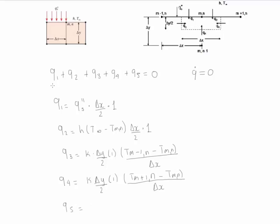And the last one that we have is Q5. We got K delta X times 1 T M N minus 1 N minus the node and the distance that it crosses is delta Y.